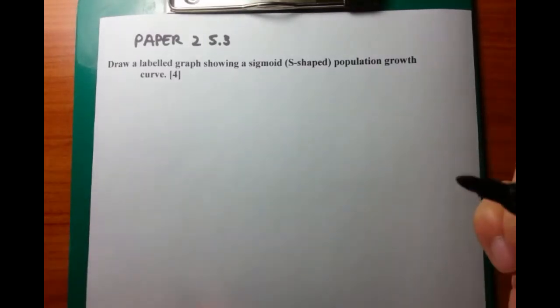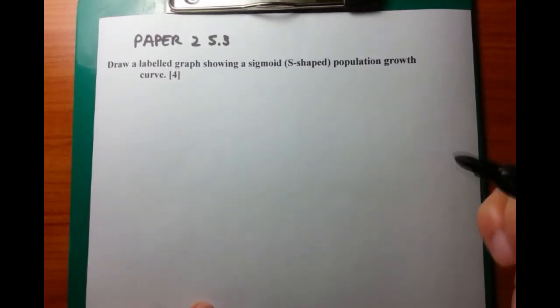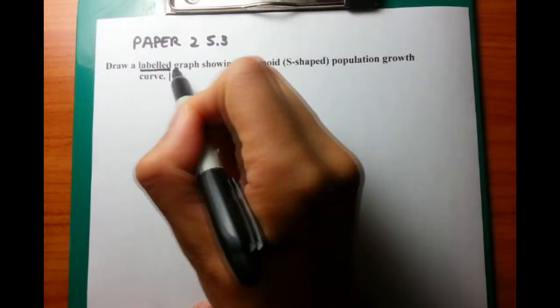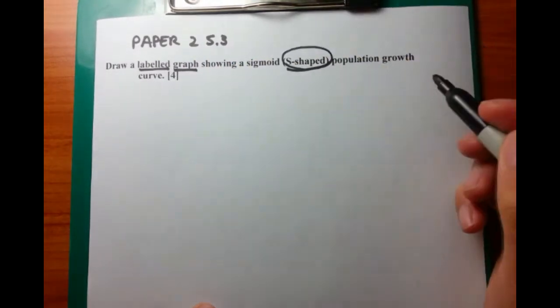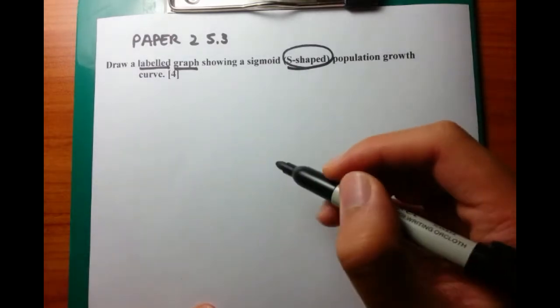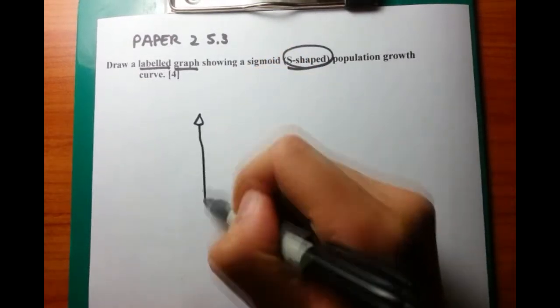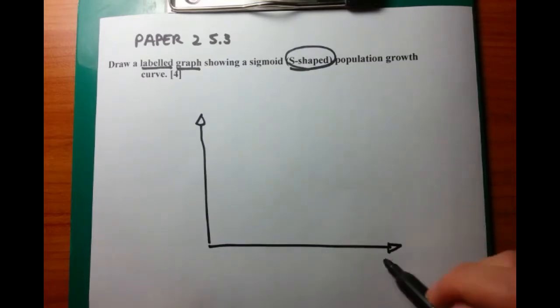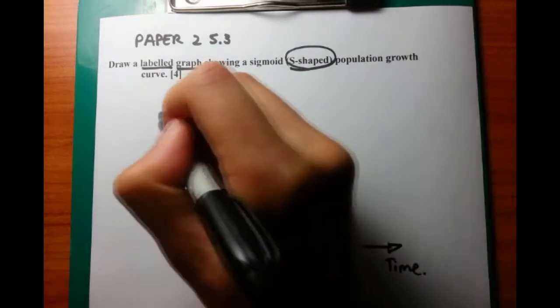So let's look at this particular question, which is an ecosystem type of question. Draw a labelled graph showing a sigmoid S-shaped population growth curve. I've already talked about the S-shaped, or I've circled rather the S-shaped population growth curve. And right now you can see me drawing the X and the Y axes.